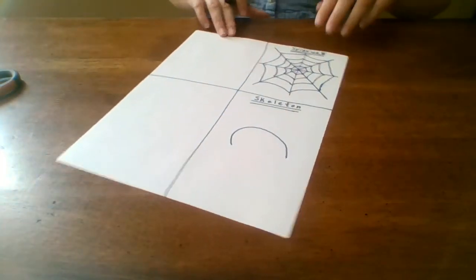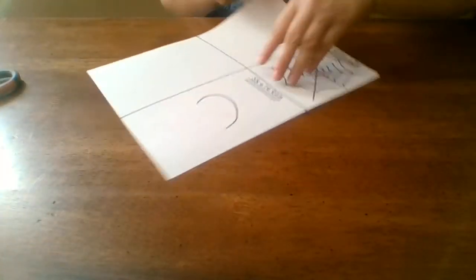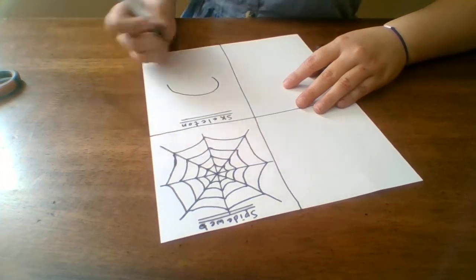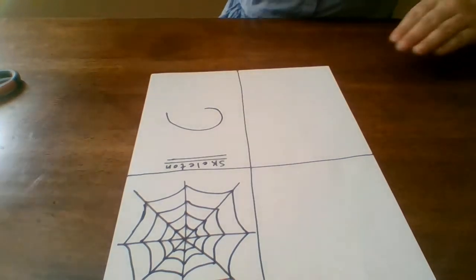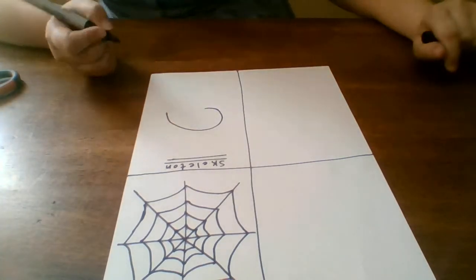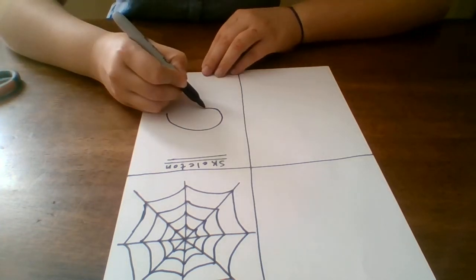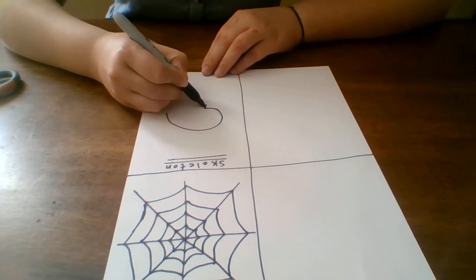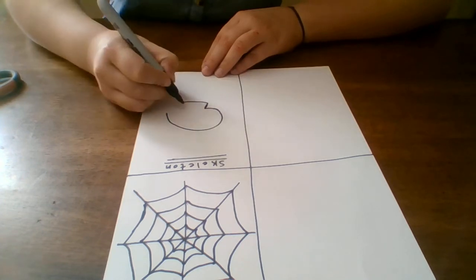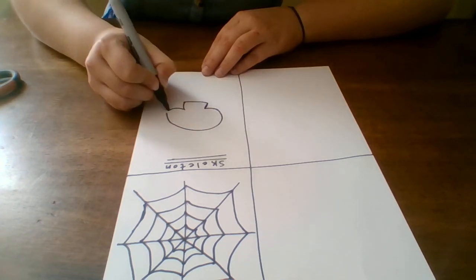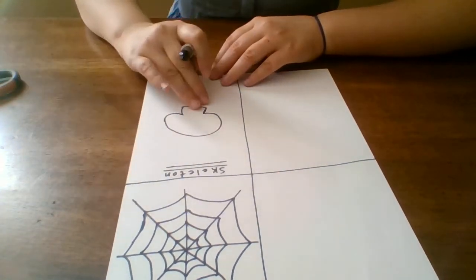But you don't want to do it like the whole way. You just want to do it like that. And then you're going to want to take that one that you probably did more of. And then you're just going to go like that. And there's your skeleton head with the jaw.